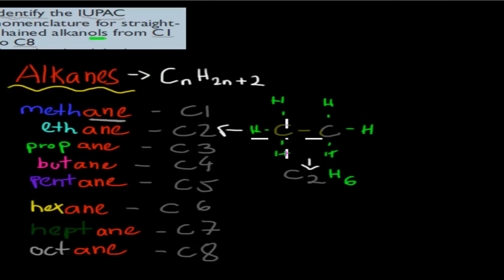And for ethane, so two carbon ones, the chemical formula was C2H6, and that makes sense because the general formula for all alkanes is CnH2n plus 2.